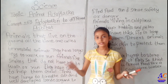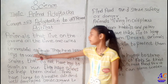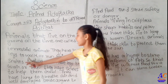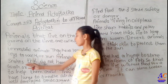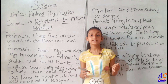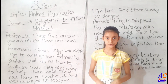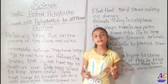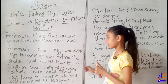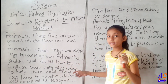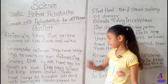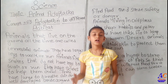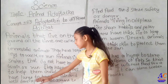Terrestrial animals have large legs to walk and run. Animals like snakes that do not have legs — they have scales to help them crawl.